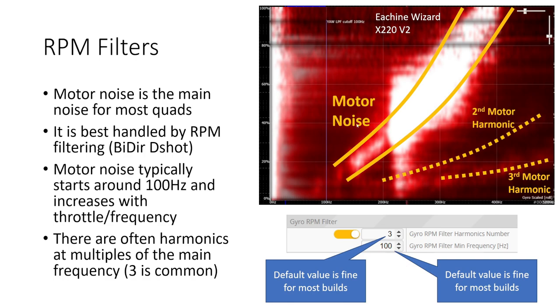You can see on the frequency versus throttle plot for this Eachine Wizard that the motor noise creates this curved band and then there's a second harmonic that's much quieter and a third harmonic that's quieter as well. In order to best handle this motor noise you're going to want three RPM filter harmonics and you want a minimum frequency of 100 hertz because typically motor noise starts to come in around 100 hertz.